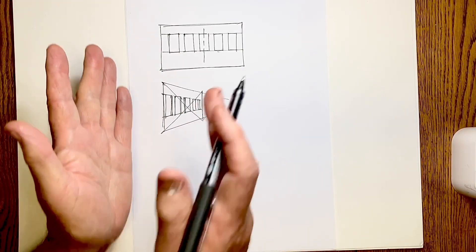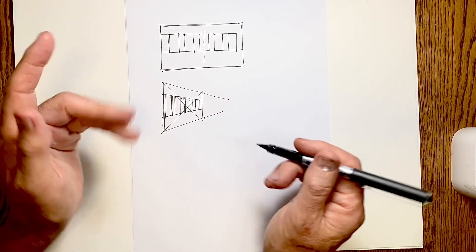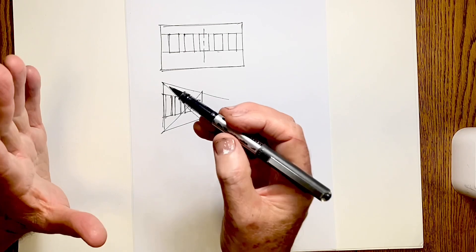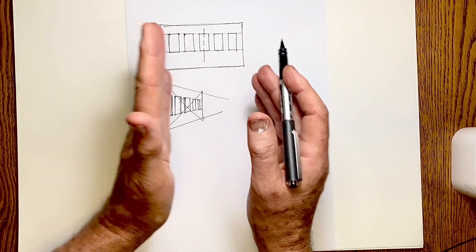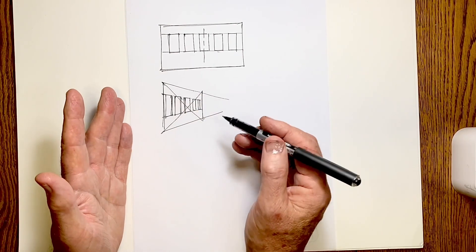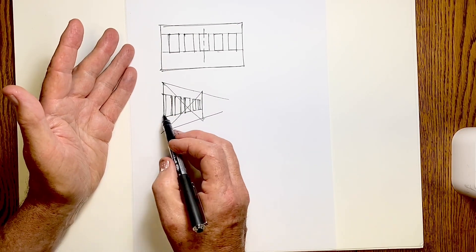With perspective, the further away an object becomes, the more visually compressed it becomes. And so there's less space to fit everything in. So everything has to become compressed. And the further away it becomes, the more compressed it becomes. The further windows are compressed more than the closer windows.